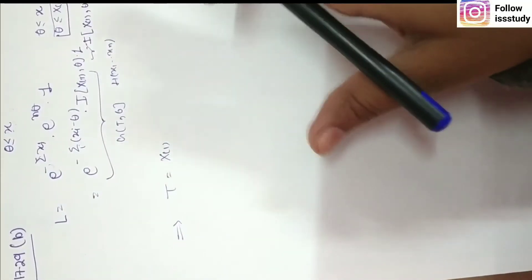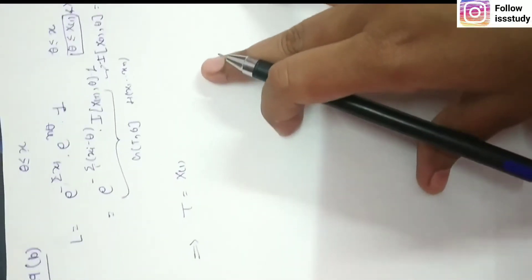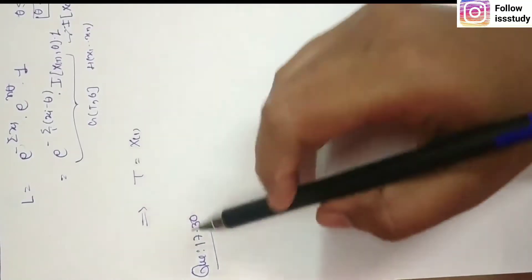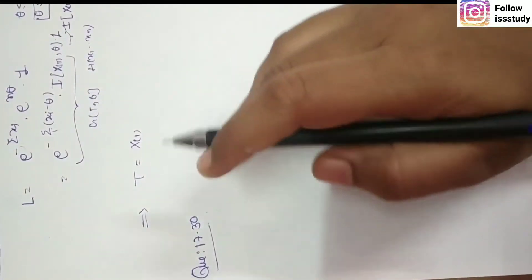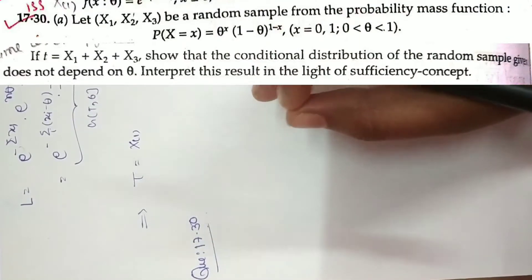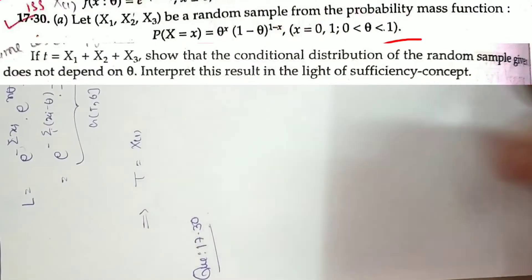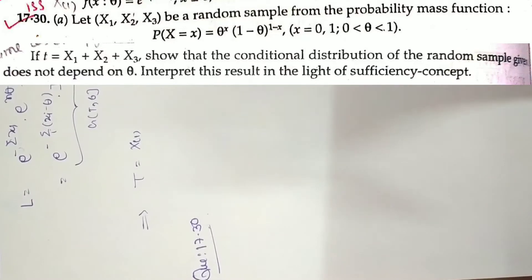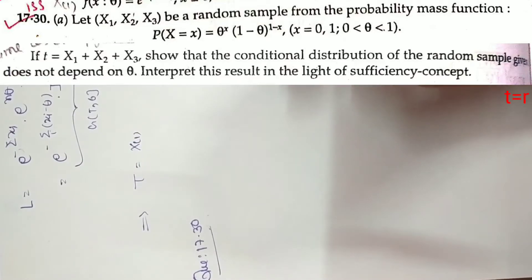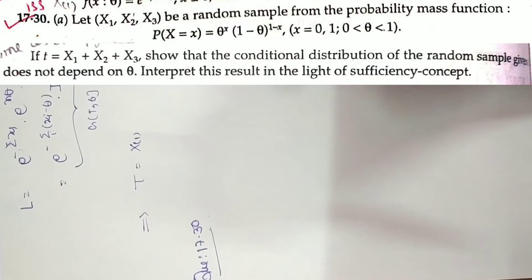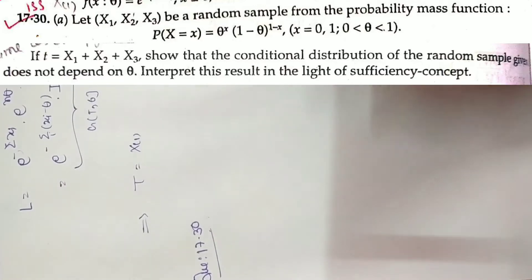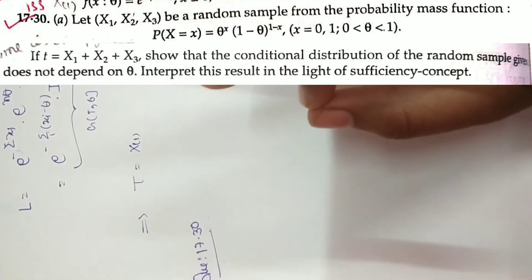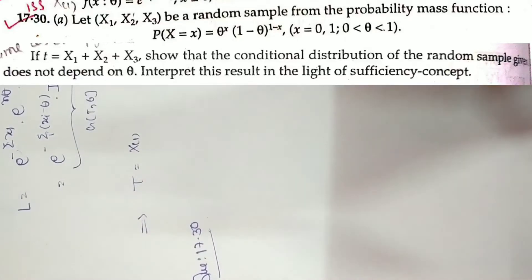Now we will discuss question 17.30. Part A says: let X1, X2, X3 be a random sample from a probability mass function — this is a Bernoulli distribution. If T = X1 + X2 + X3, show that the conditional distribution of the random sample given T = r does not depend upon theta. We already have T as the summation of Xi with three samples, and we need to show the conditional distribution is free of theta.